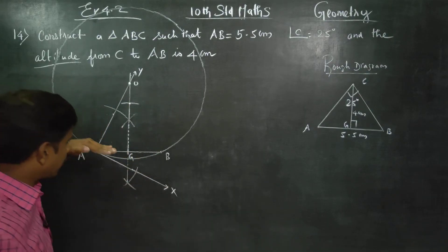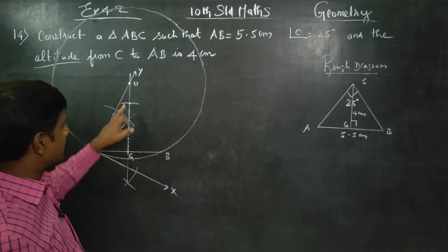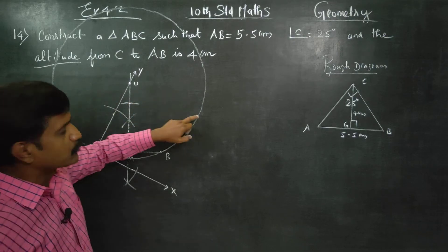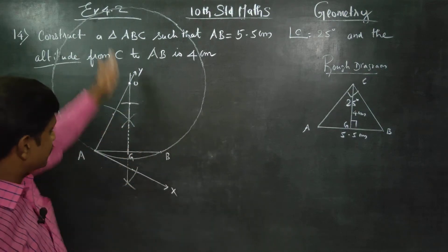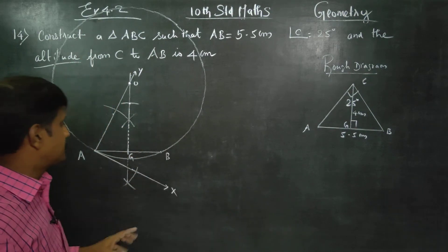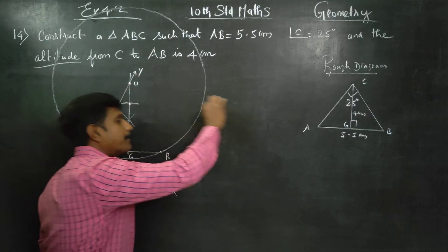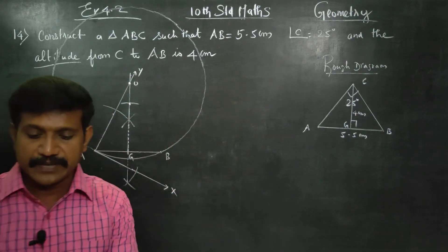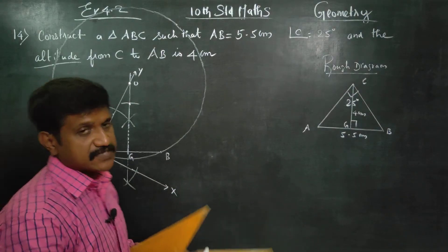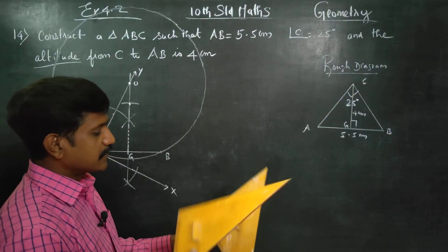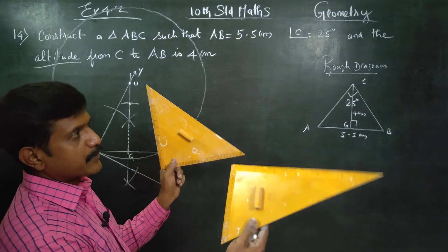There are two methods to draw the parallel line. The altitude sum requires a parallel line. First method: use a set square. Second method: use a compass. I will use the set square method as it is easier for examination.